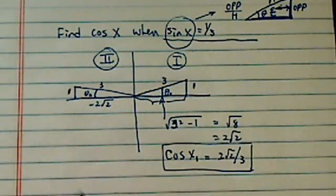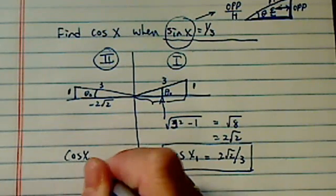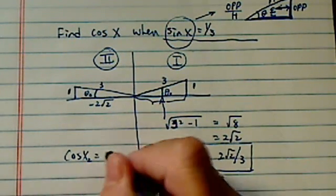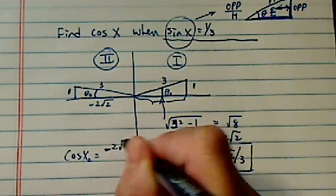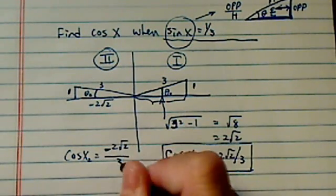Now on this side however, cosine of x2, or theta 2, is actually equal to minus 2 radical 2 over 3.